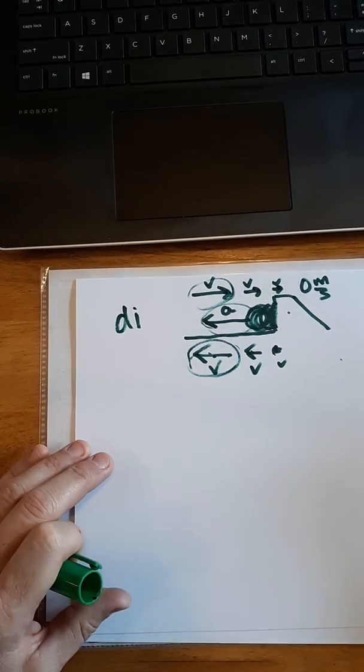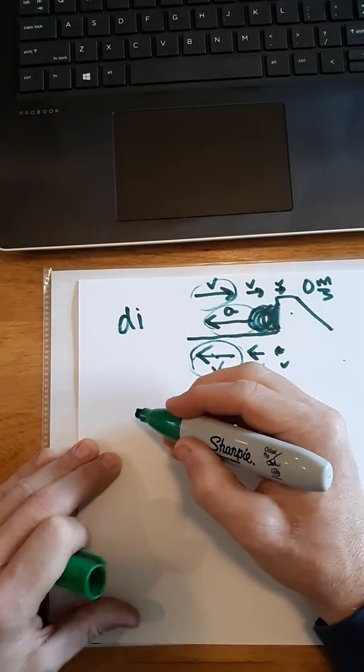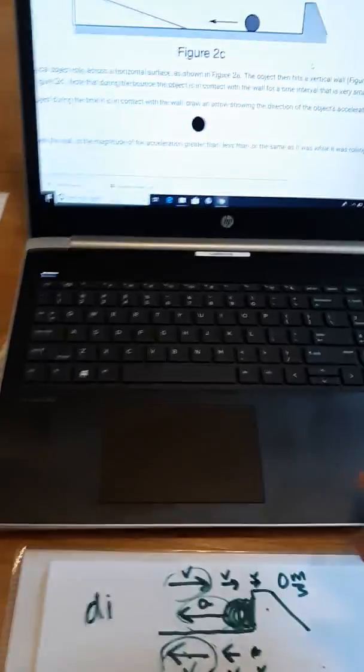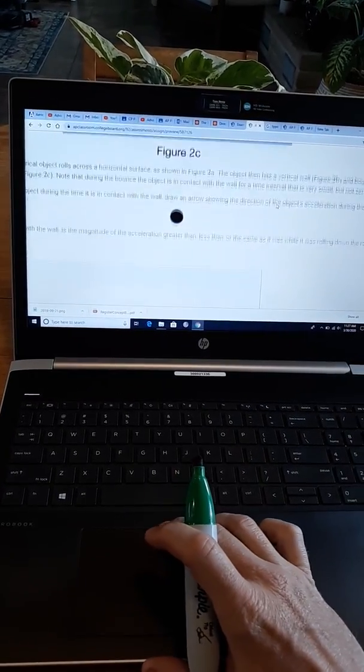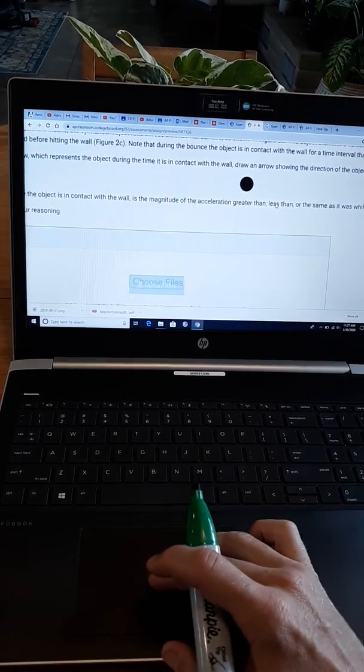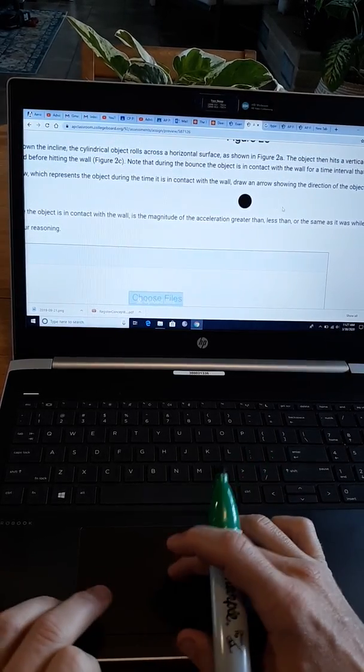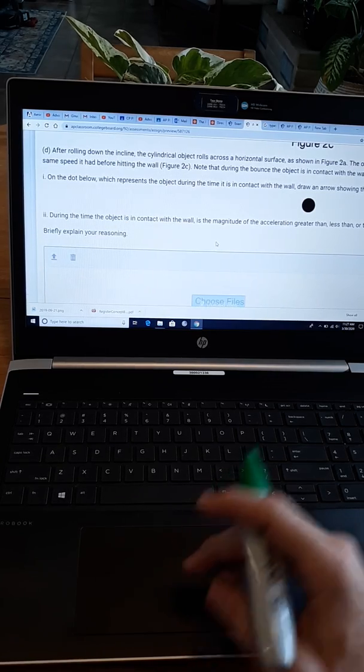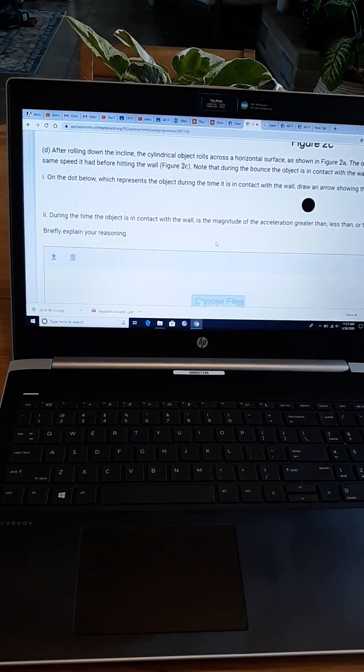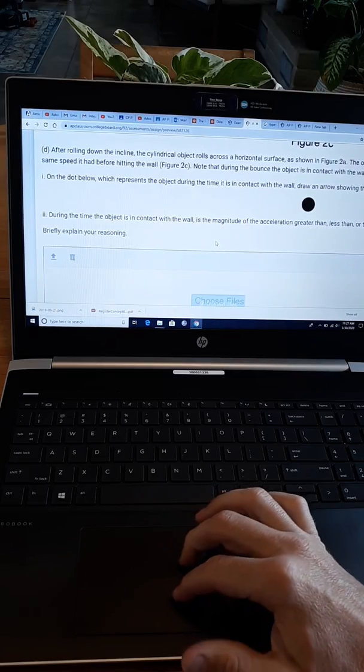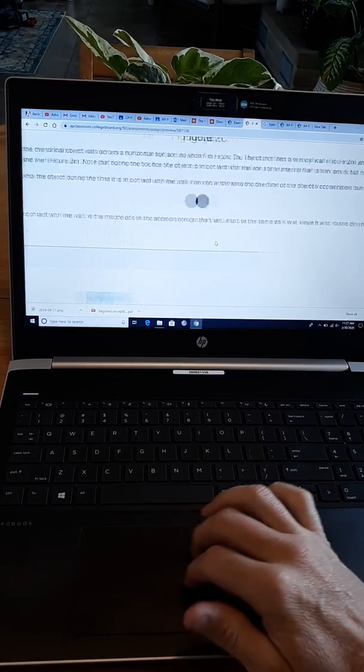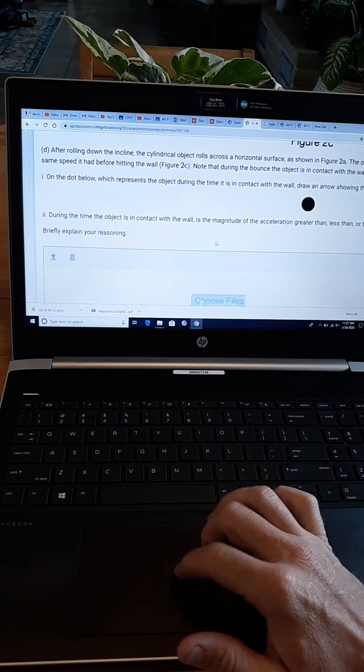They're not asking for justification, but that's the justification. All right. D2. D2 is a justification, a verbal one, though we can always use math reasoning and I always encourage you to do so. All right. Let's look at what this thing says. D2. There we go. During the time the object is in contact with the wall, is the magnitude of the acceleration greater than, less than, or the same as it was while it was rolling down the ramp? Briefly explain the reasoning.